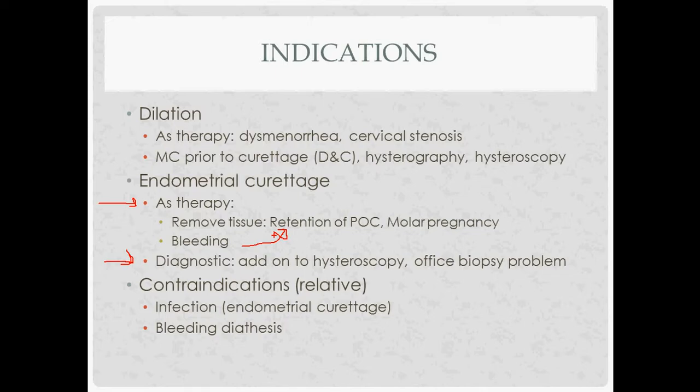The contraindications: the absolute one would be a desired intrauterine pregnancy. The relative ones are infections like PID, endometritis, or salpingitis — you'd want to try to delay the procedure until those infections are resolved. Also, if somebody had a bleeding diathesis, you'd want to think about it a little bit more.